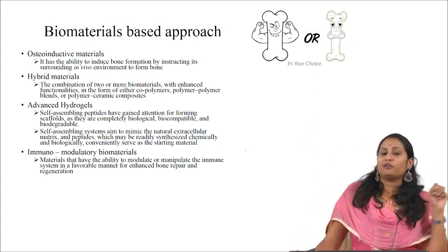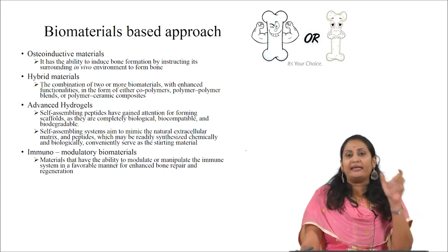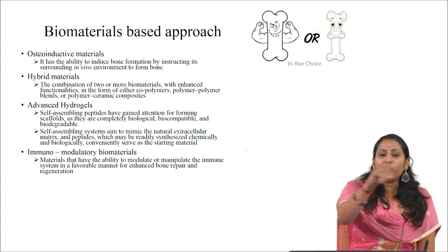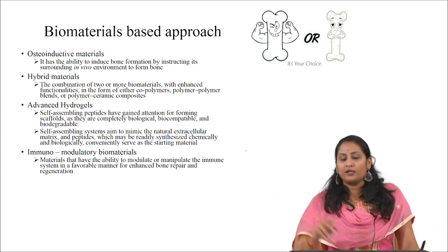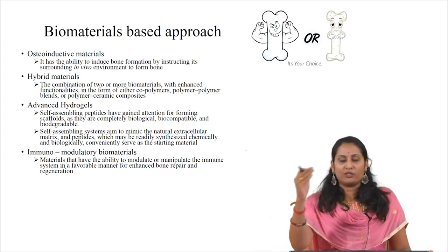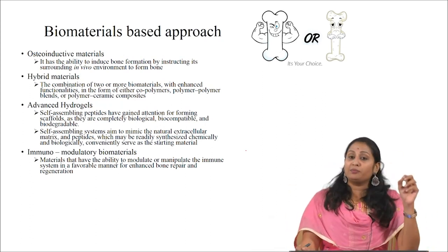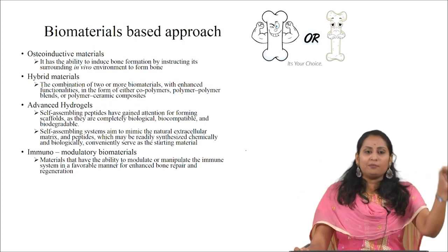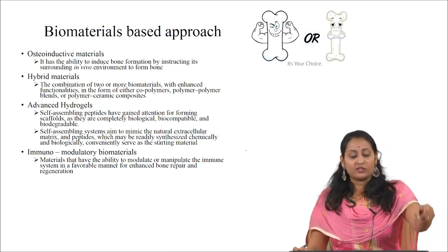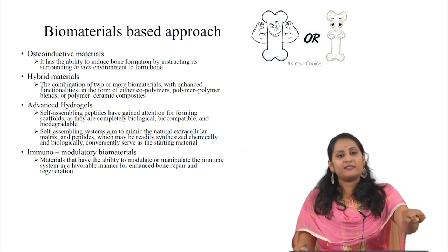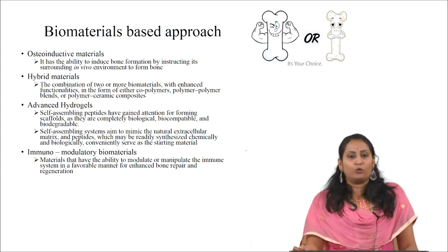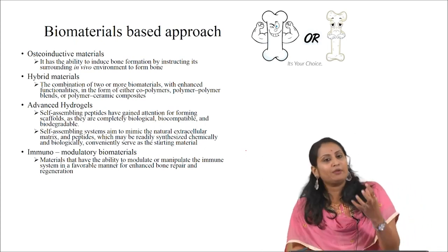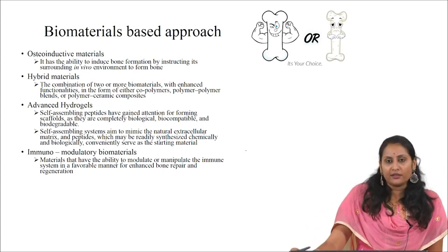The first category is osteoinductive materials. The word osteoinduction means it instructs the surrounding stem cells for the formation of bone. If a material is osteoinductive, that means it has the ability to induce bone formation by instructing the surrounding cells in the in vivo environment to form bone. For example, hydroxyapatite, calcium phosphate, or ceramic-based materials are prone to have osteoinductive properties.